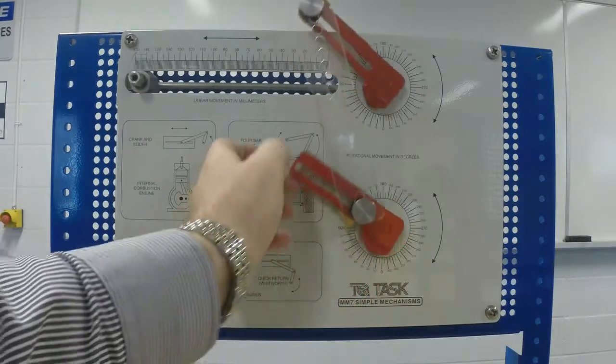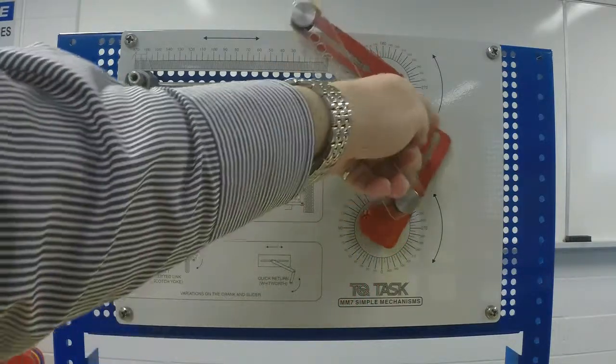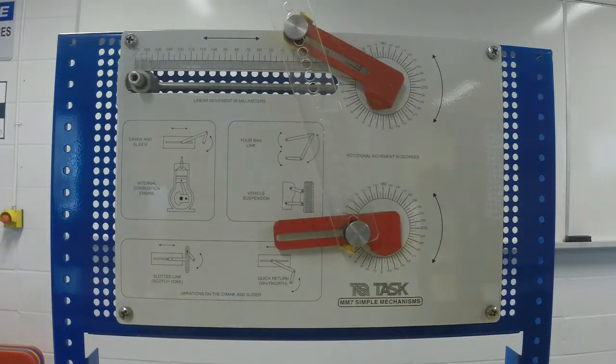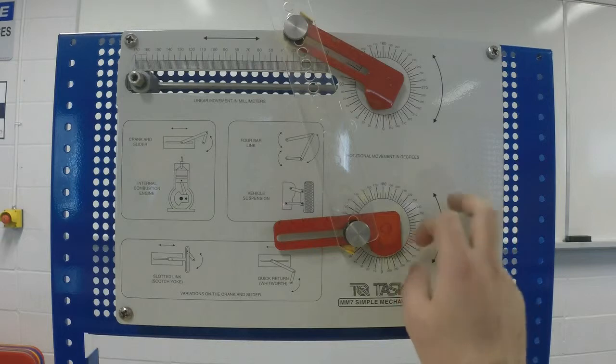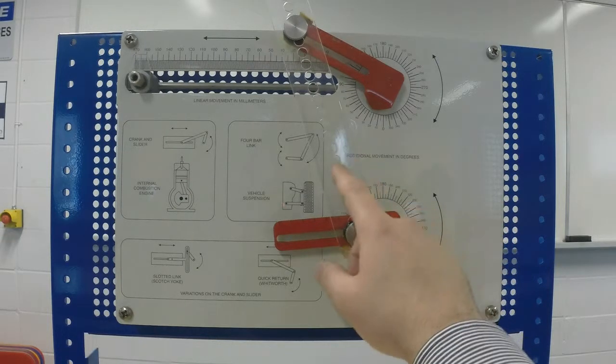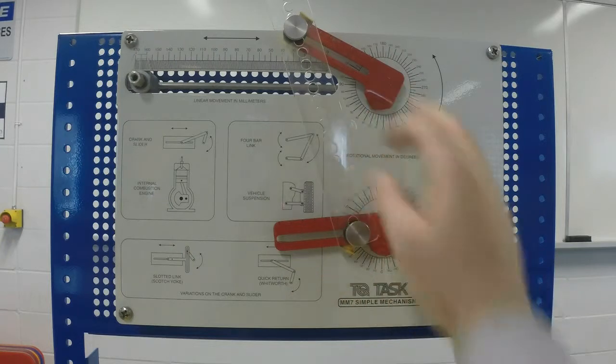So as I turn this, the other one will turn. Why is this called a four-bar linkage? Because there are four components involved in this mechanism: the first one is the ground or back plate, the second is the input, the third is the connector, and the fourth is the output.